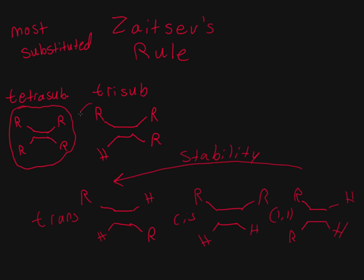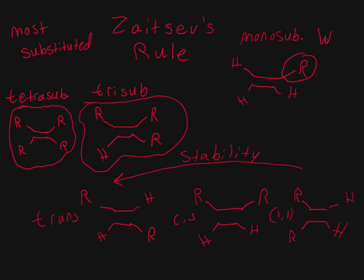Using Zaitsev's rule, stability increases going to the left: trans is the most stable di-substituted, then cis, and then 1,1-di-substituted. So your number one most stable product is tetra-substituted, then tri, then trans di-sub, then cis, then 1,1-di-sub. And the very least stable — the most terrible product you could form — would be mono-substituted, where we only have one R group.